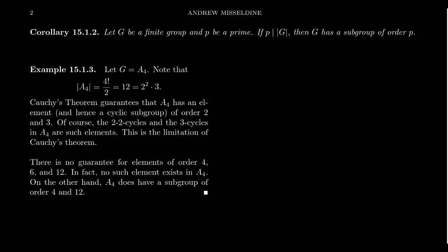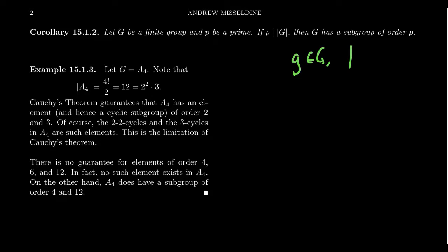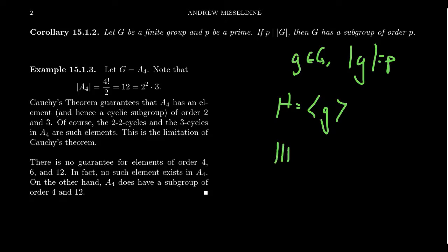That proves Cauchy's theorem. Every group whose order is divisible by a prime has an element of that prime order. In particular, if G is a finite group and prime P divides its order, then G has a subgroup of order P. By Cauchy's theorem we get some element g with order P, and taking H to be the cyclic subgroup generated by g, we get |H| = P. So Cauchy's theorem guarantees that every finite group has a subgroup of every prime order dividing the group's order.